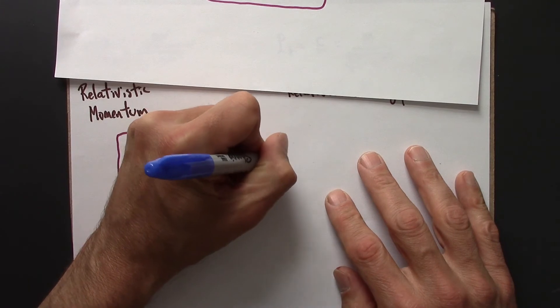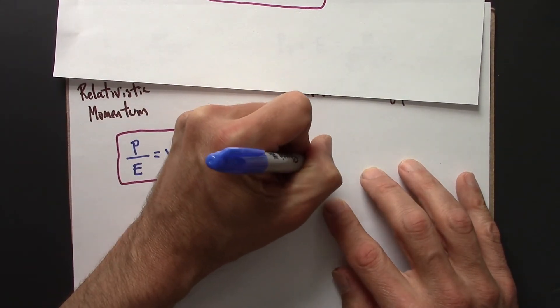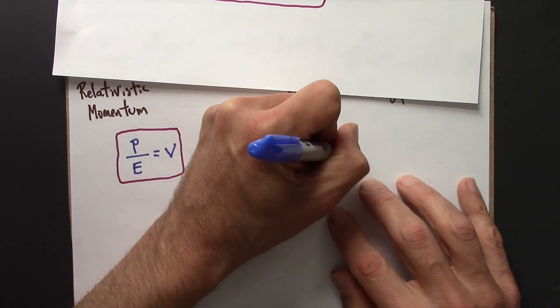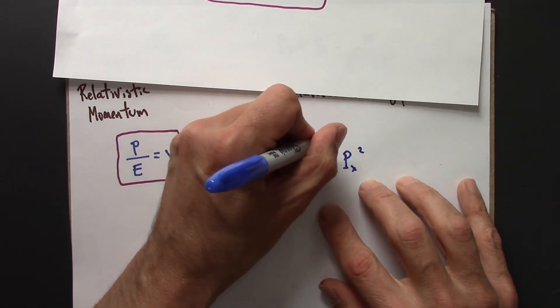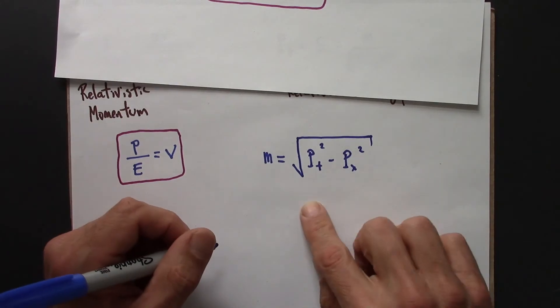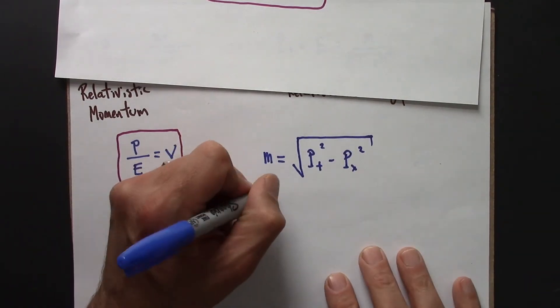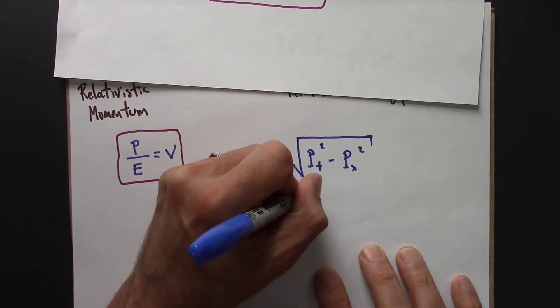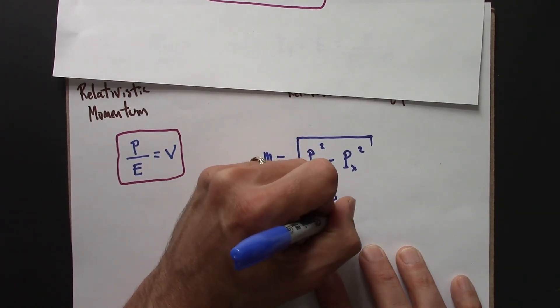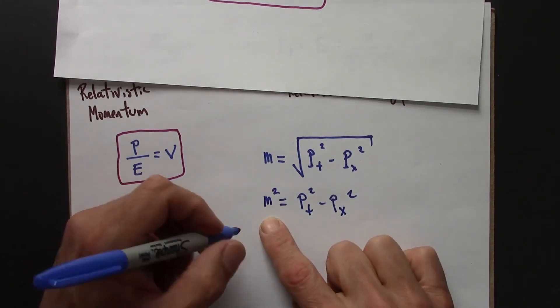m was square root of pt squared minus px squared. And usually this is written by squaring both sides. We have that square root there. And so m is m,